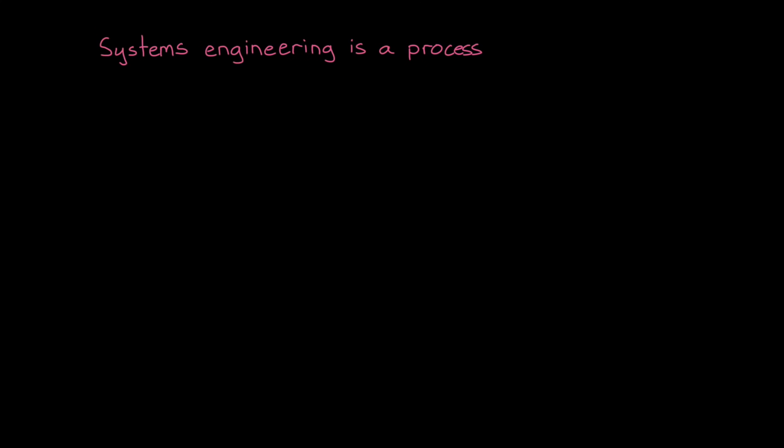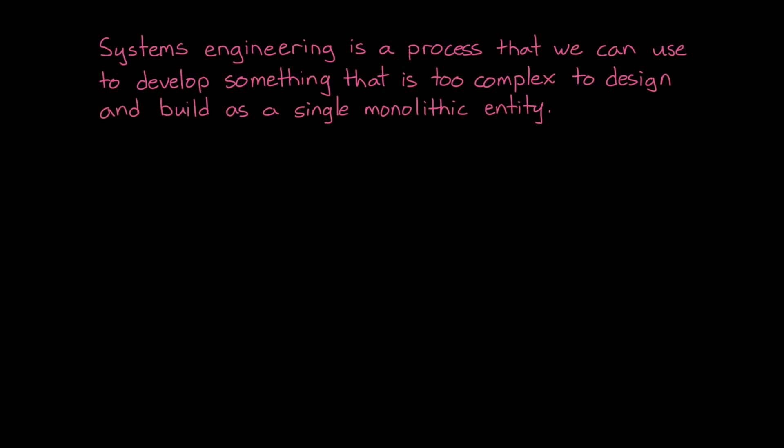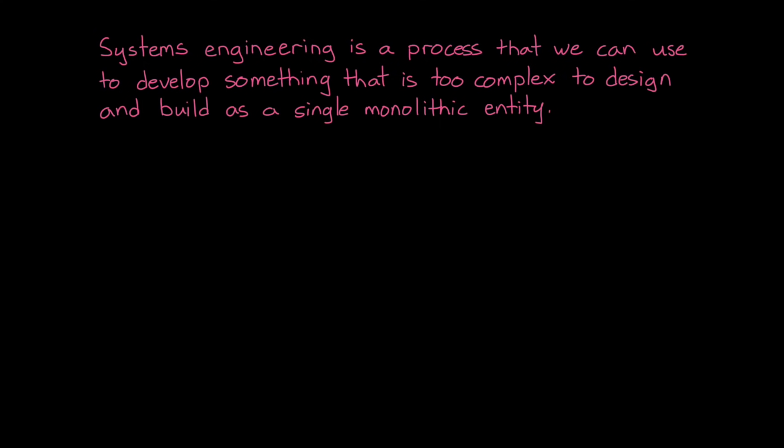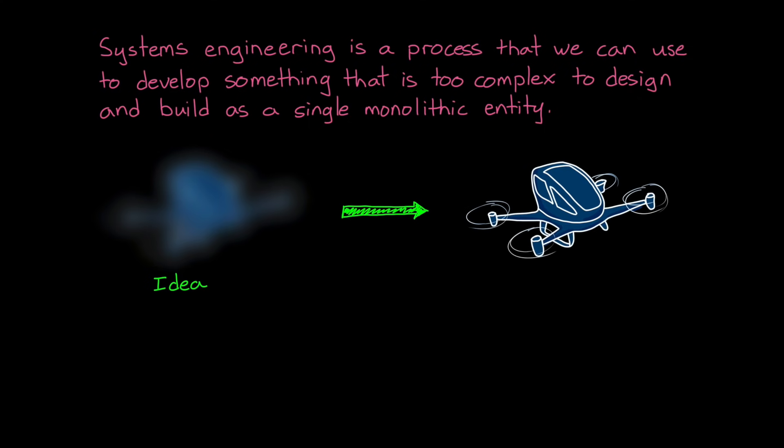Systems engineering is a process that we can use to develop something that is too complex to just design and build as a single, monolithic entity. It's starting from an idea, often nebulous and ill-defined, and then putting form to it. It's thinking about the system as a whole and understanding the interactions between it and the external world, as well as the interactions of the internal components.